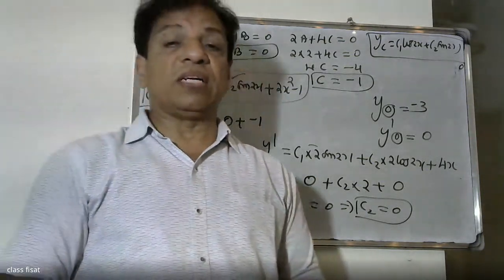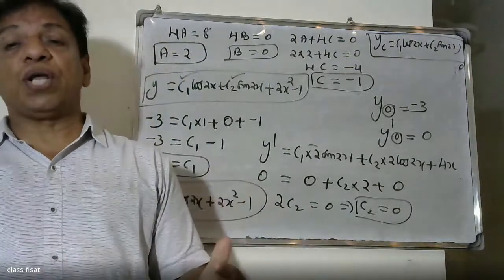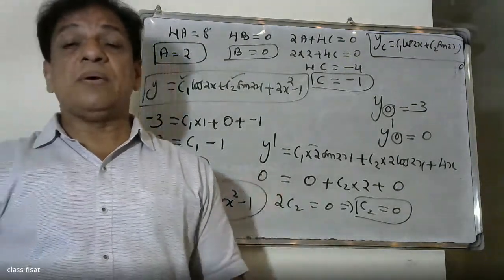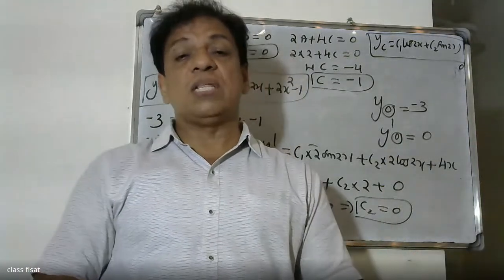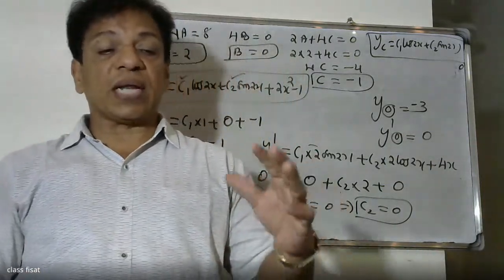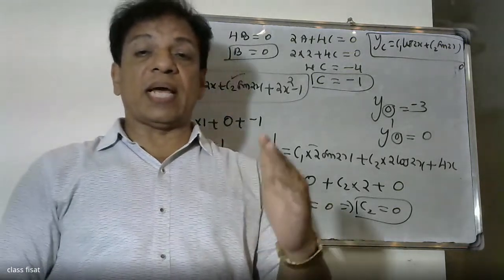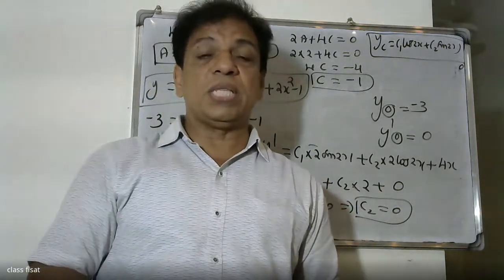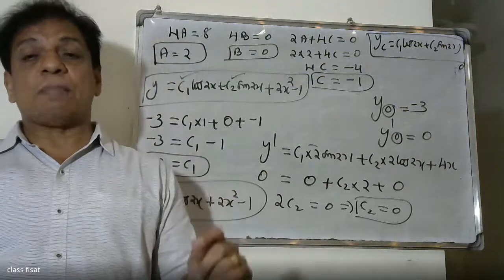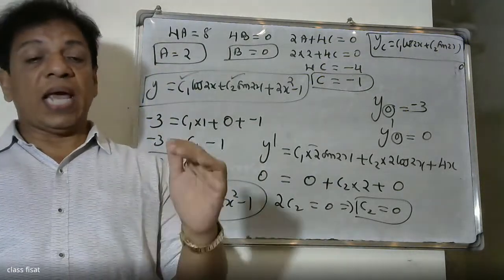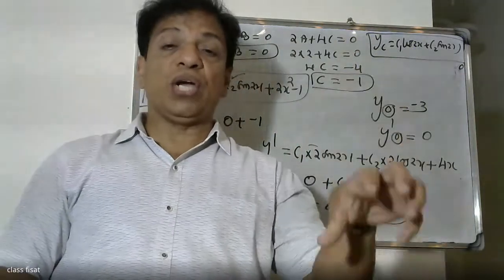To summarize: we found the auxiliary equation m² + 4 = 0, giving m = ±2i. The complementary function is c1·cos(2x) + c2·sin(2x). Since the right-hand side is 8x², we chose the particular solution form Ax² + Bx + C, found the derivatives, and substituted into the equation.